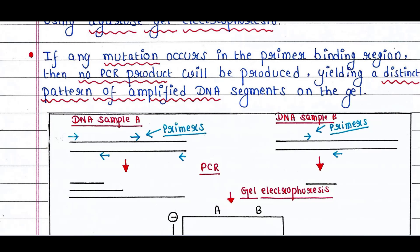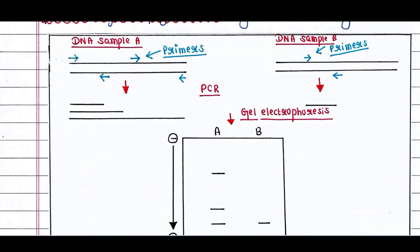We will see this figure to understand this. Suppose this is the DNA isolated from person A and this is the DNA isolated from person B. Now we add the same primers in both samples and run PCR.